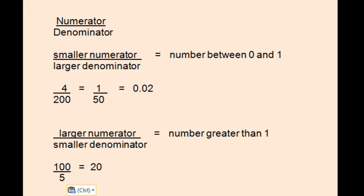On the other hand, if the numerator is larger than the denominator, the value of the fraction is greater than 1, for example, 100 over 5. These trends are important to keep in mind when trying to understand the inequality that represents the Heisenberg Uncertainty Principle.